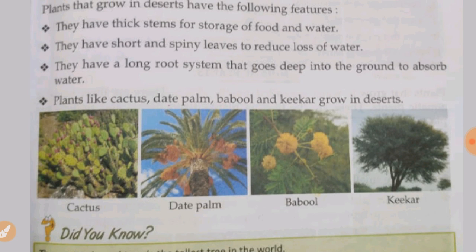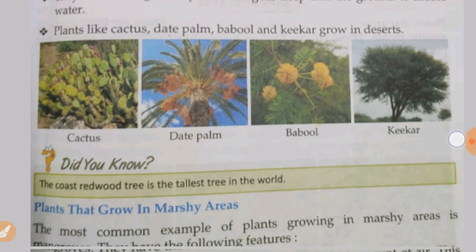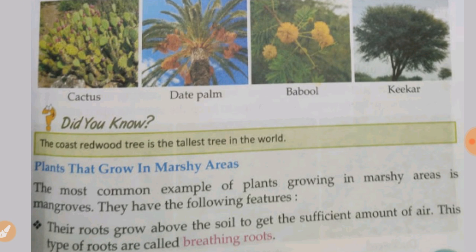Plants like cactus, date palm, babool, and keekar grow in deserts. Did you know? The coast redwood tree is the tallest tree in the world.